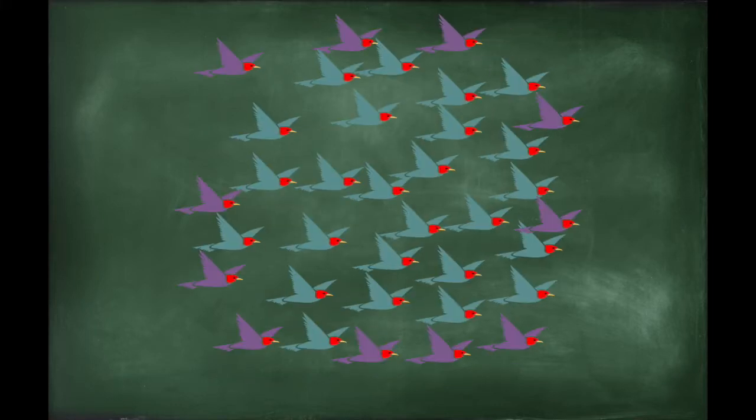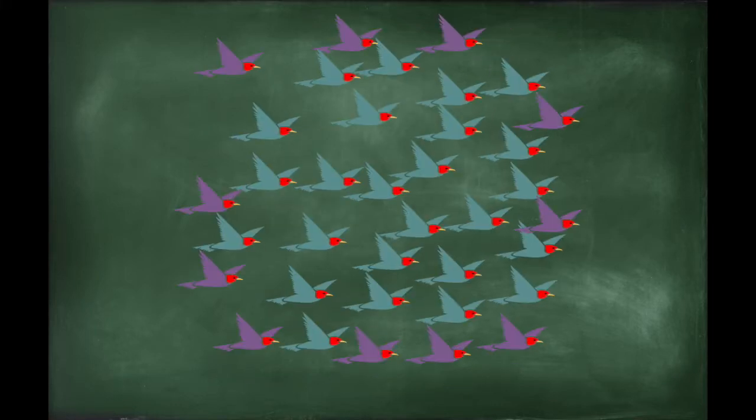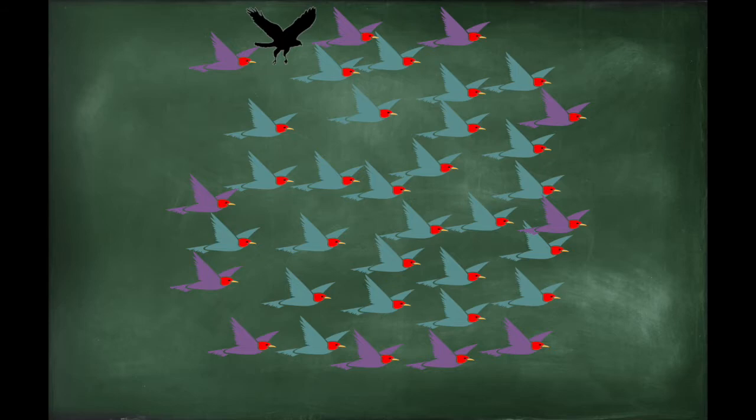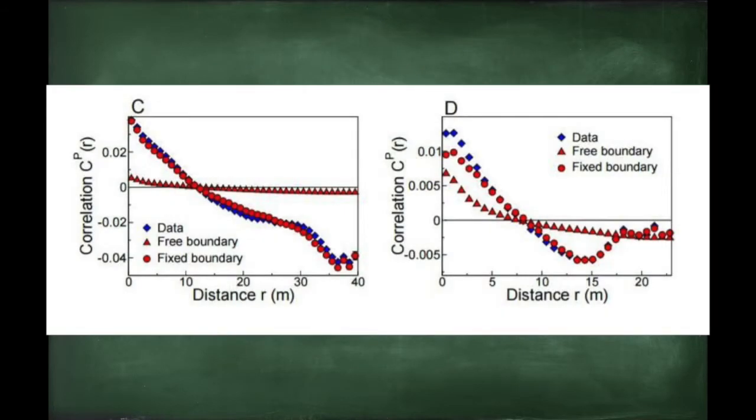In addition, the model treats birds on the border differently than birds on the interior of the flock. This should make sense. Birds on the border have fewer neighbors and take environmental cues in addition to neighborly ones when deciding on how to turn. We can see that a model is better with border effects included.